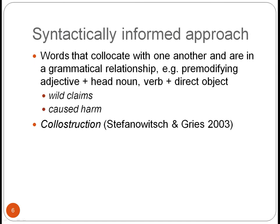A second approach is the syntactically informed approach. Here researchers are interested in words that collocate with one another and are in a grammatical relationship. For example, one of them is a pre-modifying adjective and the other is the head noun, as in 'wild claims', or one word is a verb and the other is its direct object, as in 'caused harm'. Two researchers in particular are associated with this approach, Stefanovic and Gris, and they have coined the term 'collostruction'.